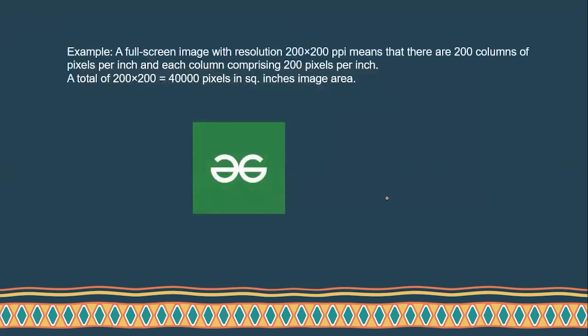Why are we calculating pixel per inch? Because if you want to know the pixel density, you need to calculate pixel per inch. To find out the density of a pixel, we need to calculate pixel per inch. Remember students: density and pixel per inch depend on the screen size and the screen resolution — based on your screen size and screen resolution, the density and pixel count will appear.